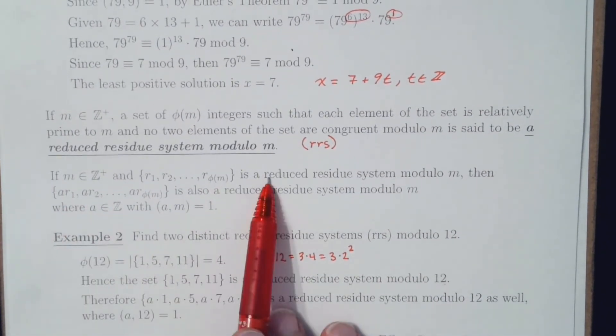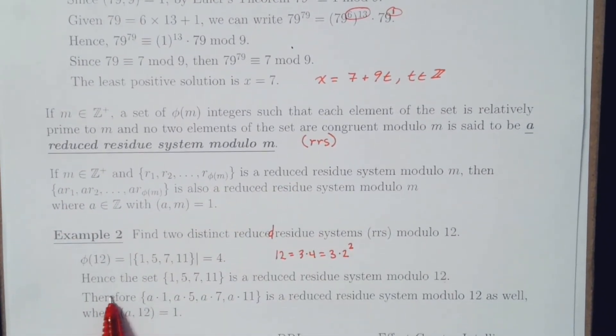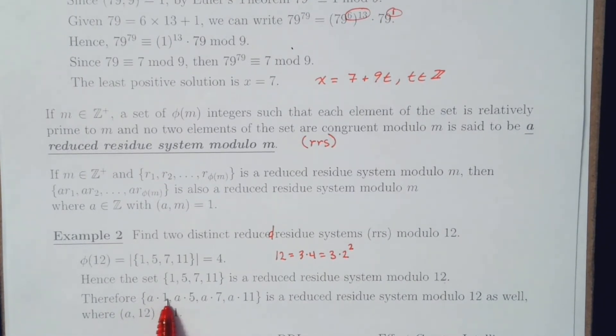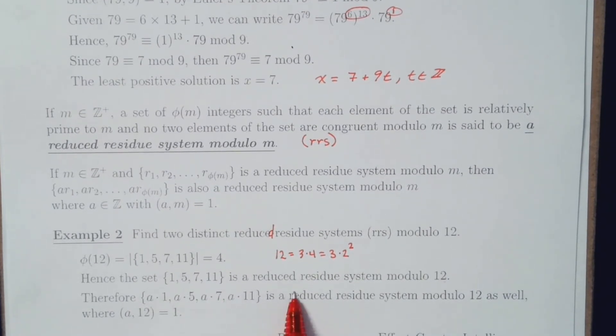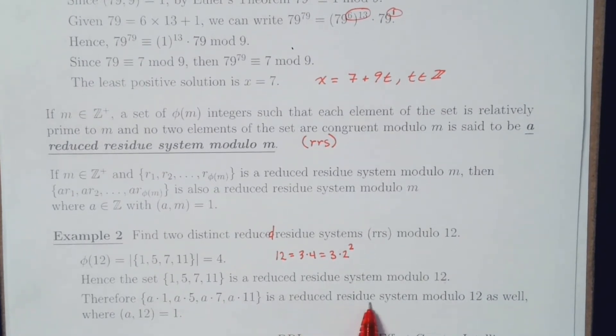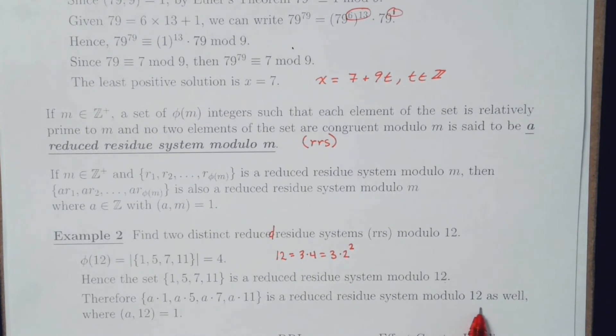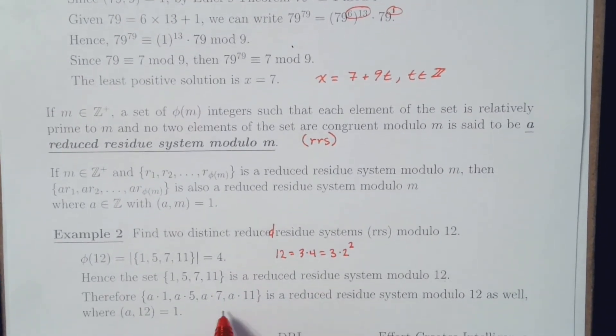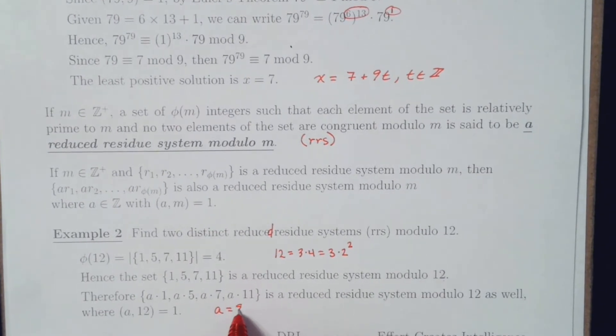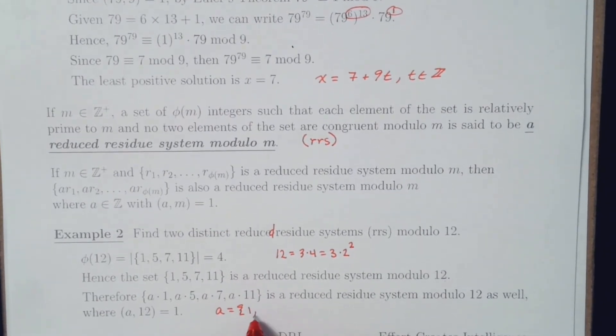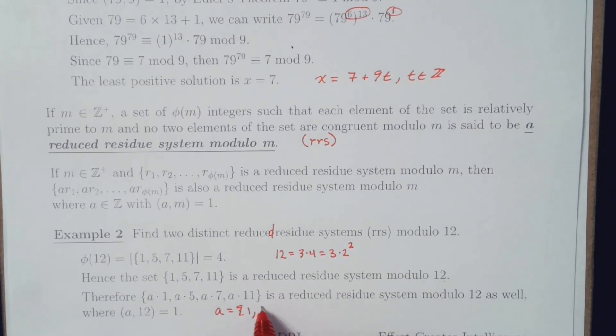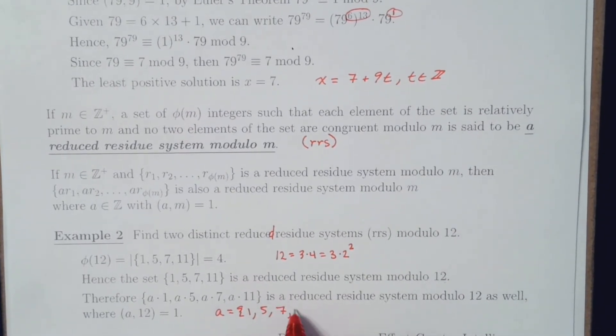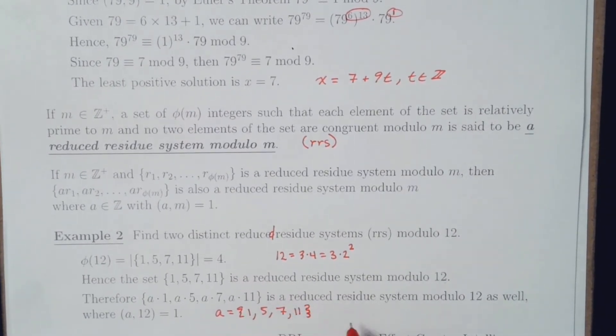And additionally, from this second piece of information, a times the elements is also a reduced residue system modulo 12, where a and 12 are relatively prime. In other words, where a would be equal to 1, 5, 7, or 11.